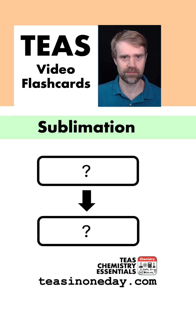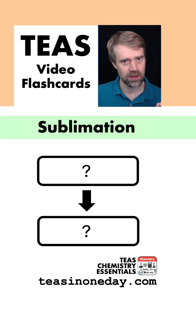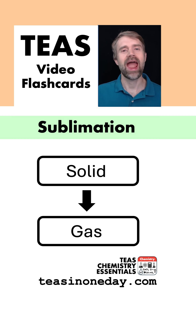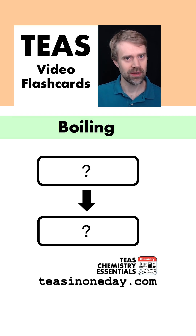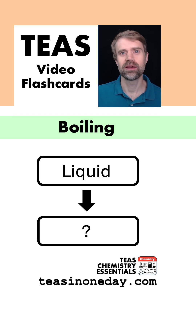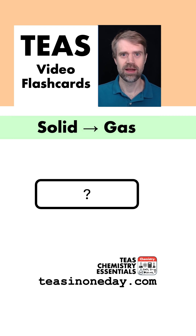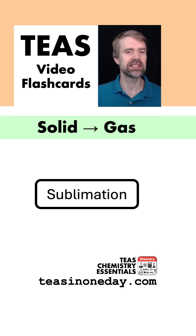Sublimation — what to what? Sublimation is solid directly to gas. And boiling is what? Liquid to gas. Solid to gas — what's that? Sublimation. The tests love it — directly from solid to gas.